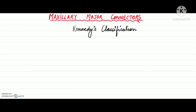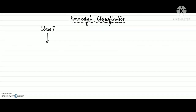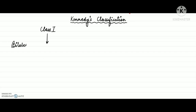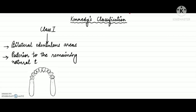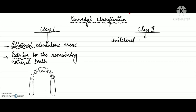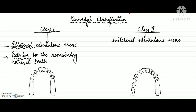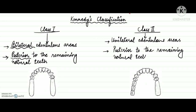We will start with Kennedy's classification for removable partial dentures. In Kennedy's class 1, there are bilateral edentulous areas located posterior to the remaining natural teeth, as we can see in this diagram. In Kennedy's class 2, there is a unilateral edentulous area located posterior to the remaining natural teeth, as shown here.